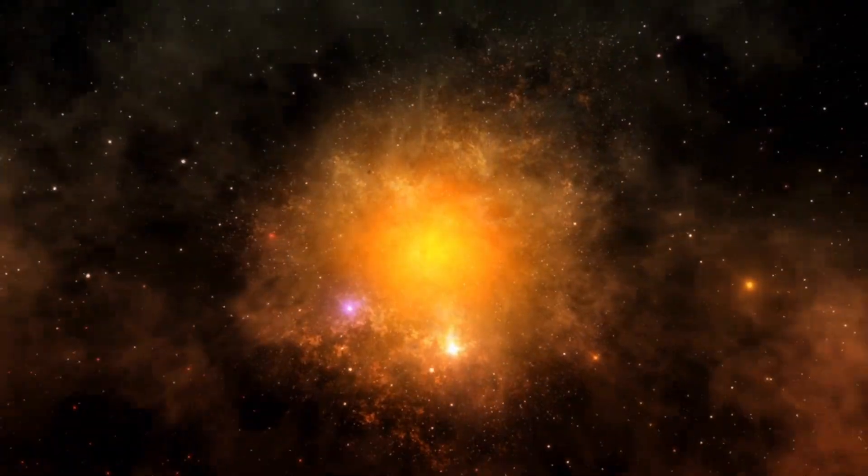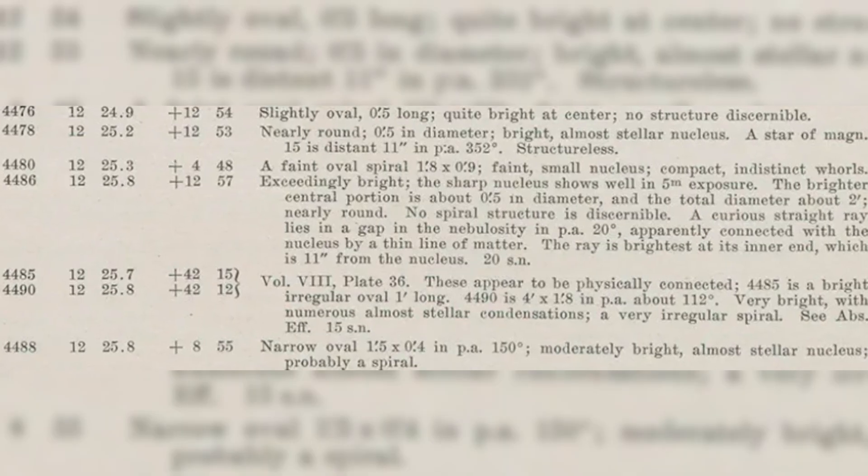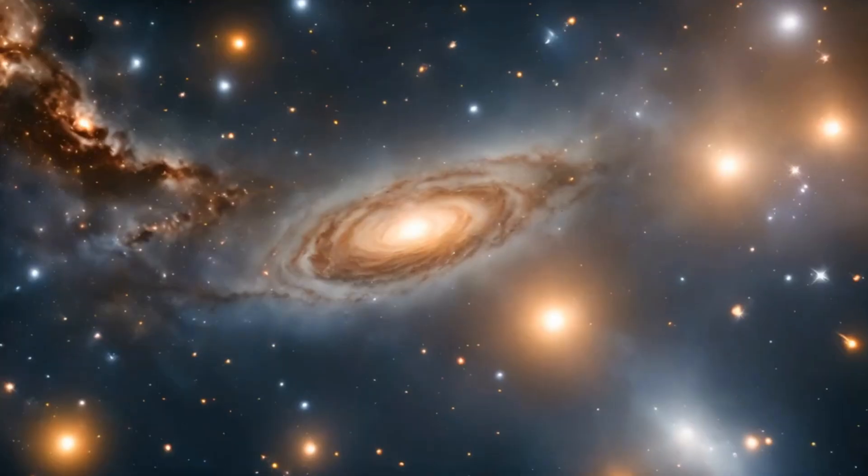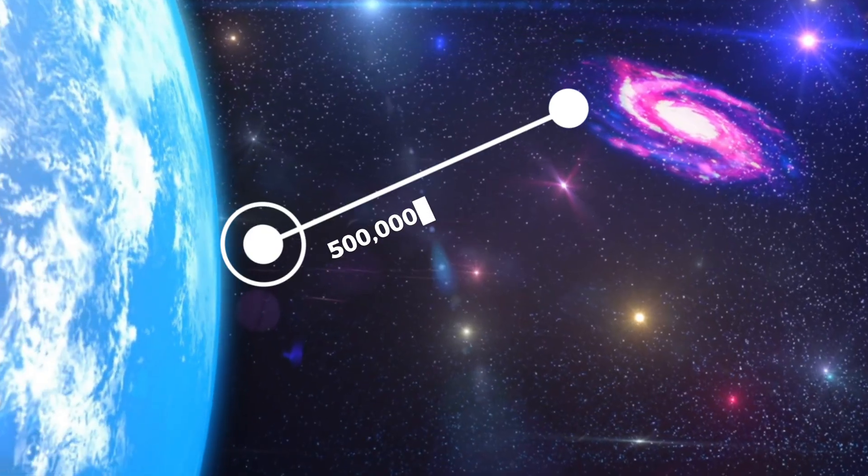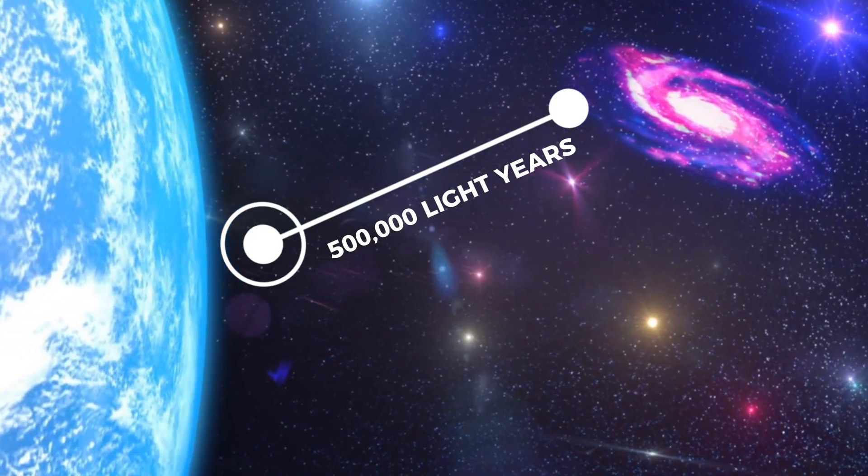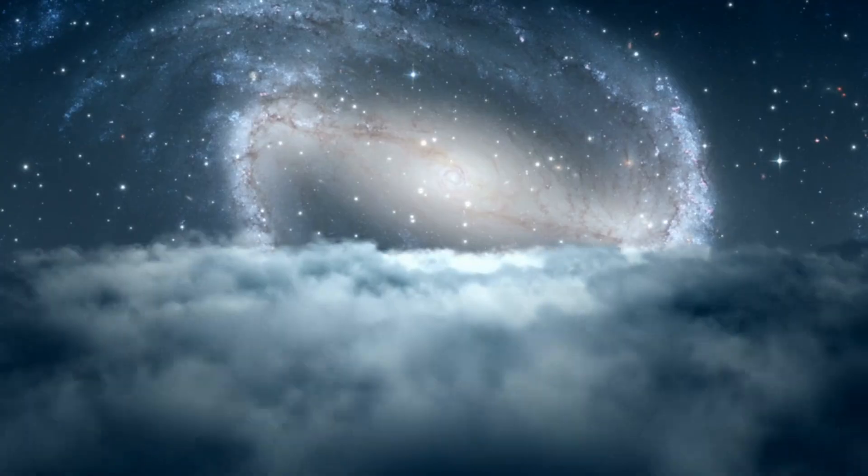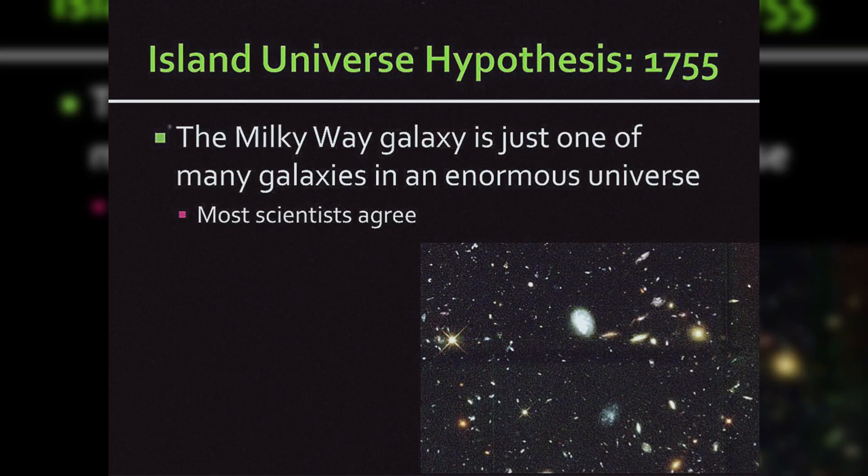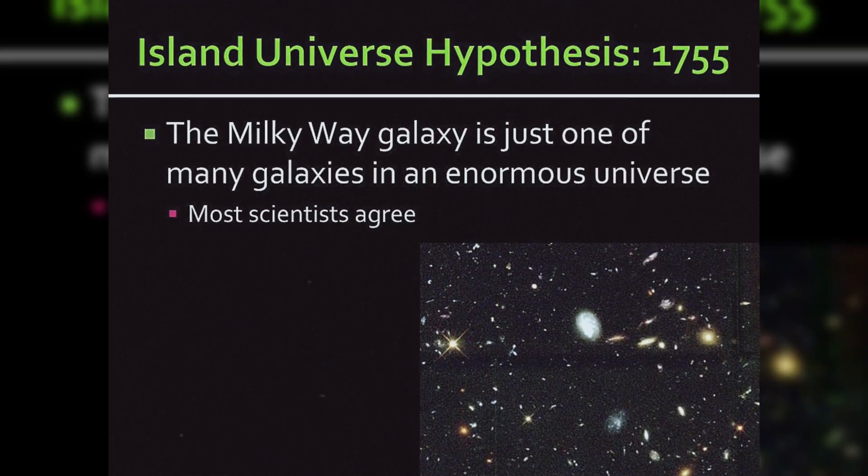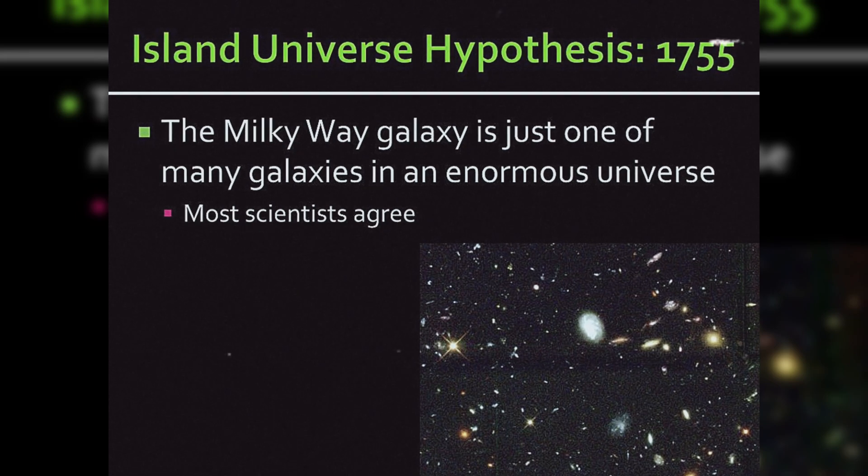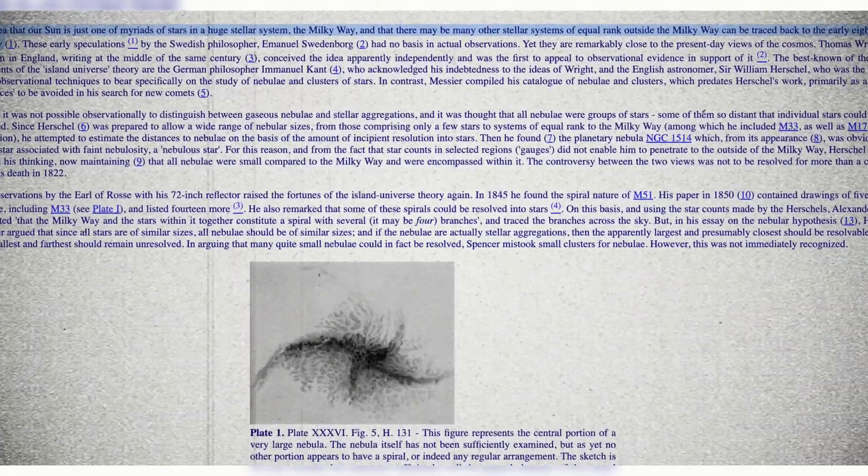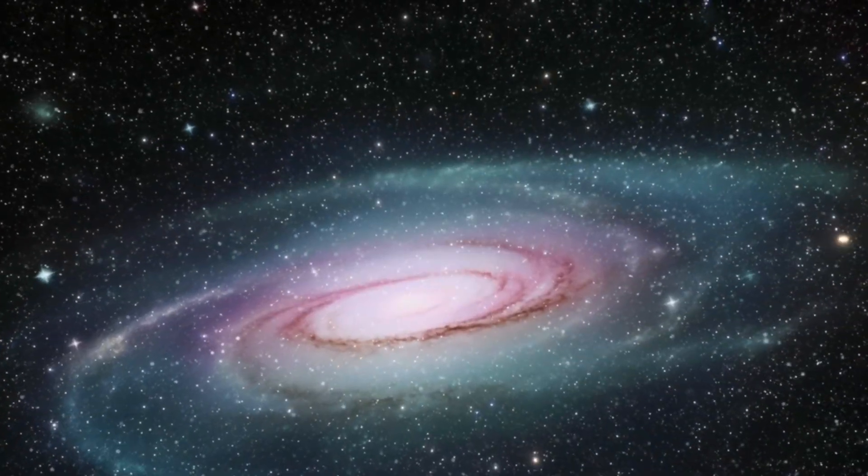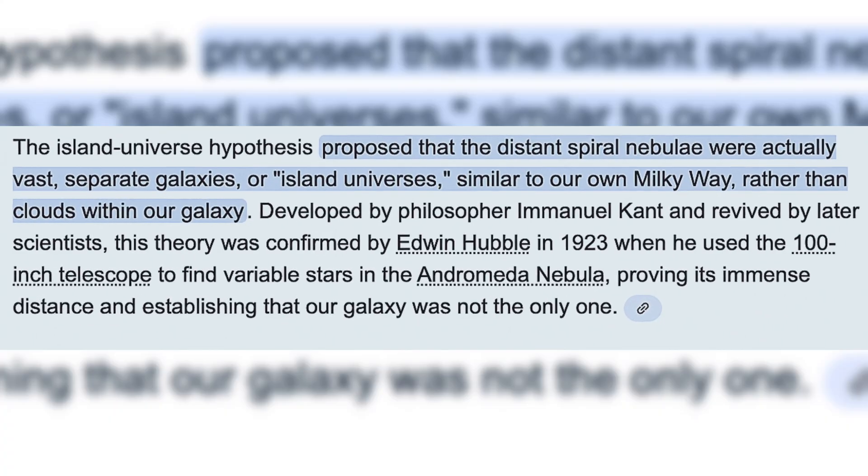Leveraging this vital distinction, Curtis made a groundbreaking estimate, positing that Andromeda was located approximately 500,000 light years away from our planet. This pivotal realization led him to advocate for the island universe hypothesis, a revolutionary idea suggesting that what were previously considered spiral nebulae within the Milky Way were in fact independent galaxies.